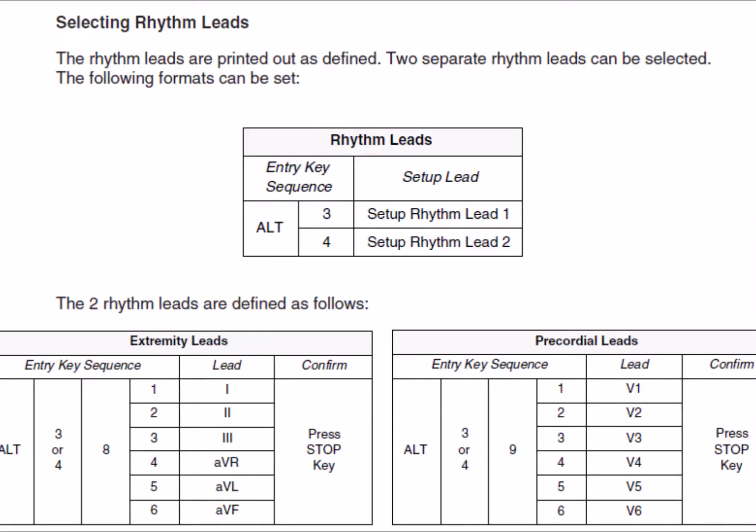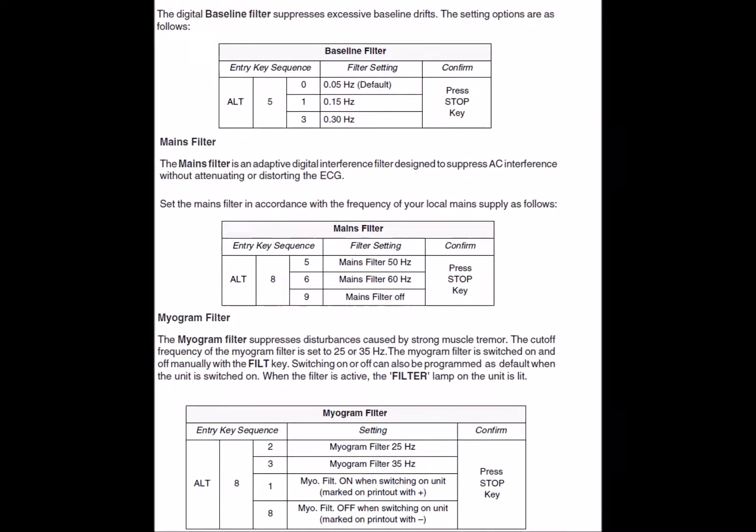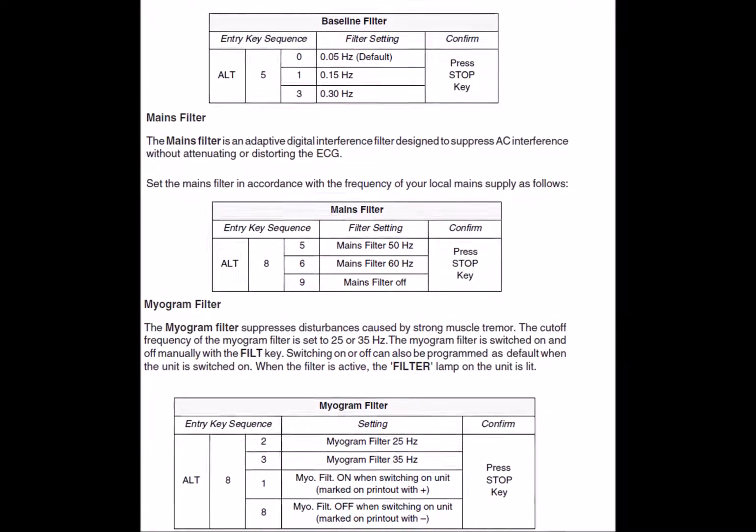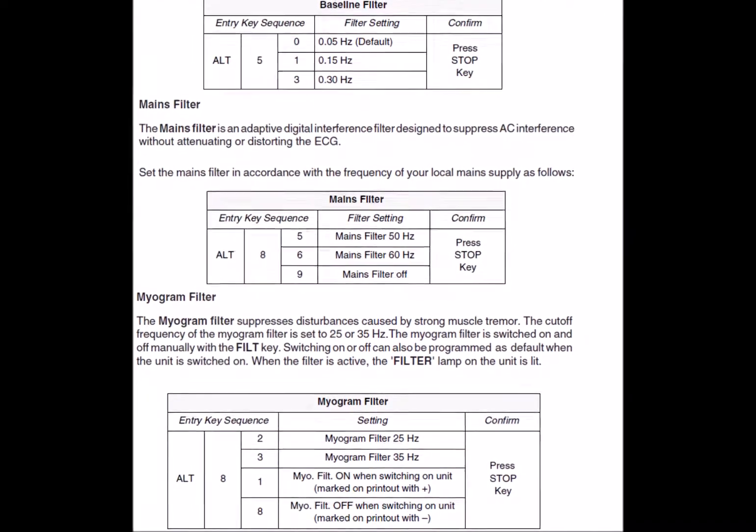To select the leads for the rhythm and format 1 and 2, these are the following codes. To define the settings for the filters, these are the corresponding codes.